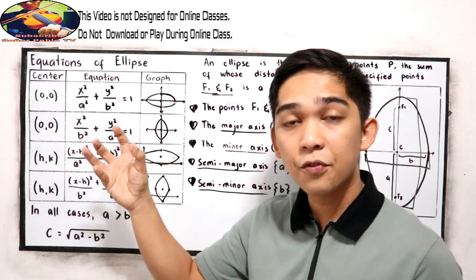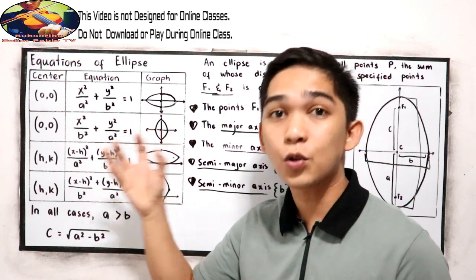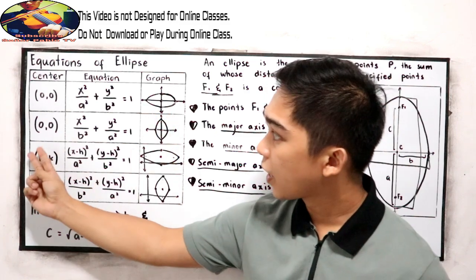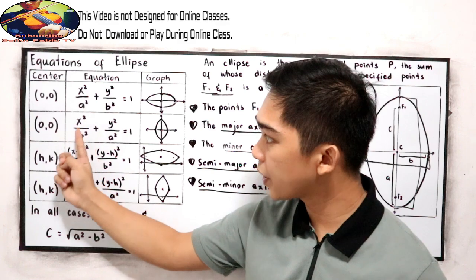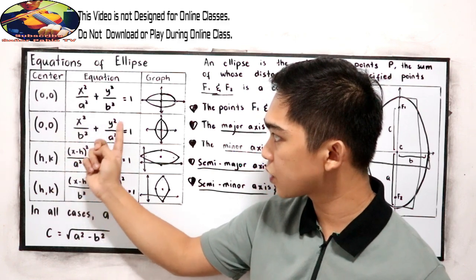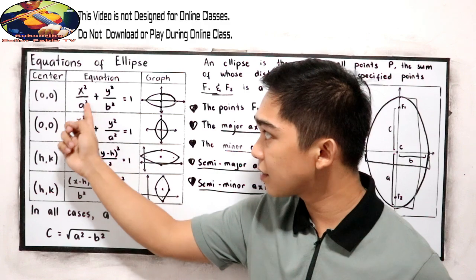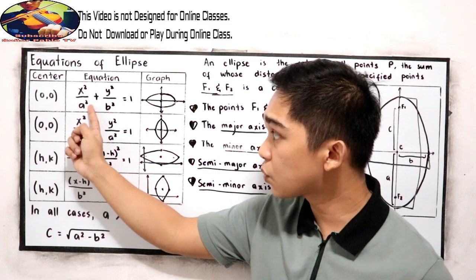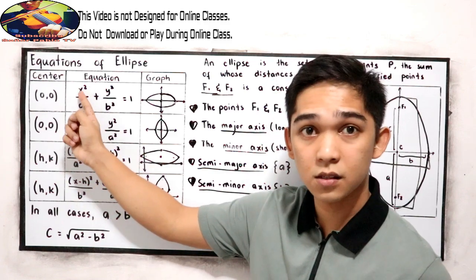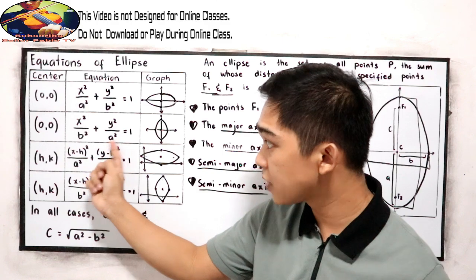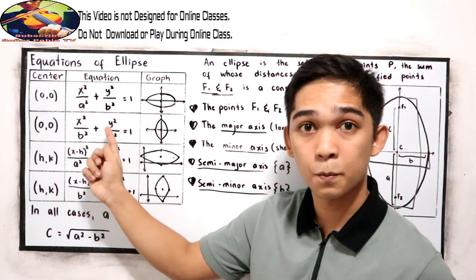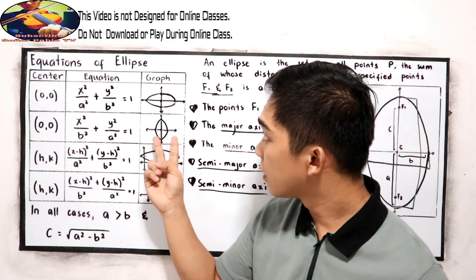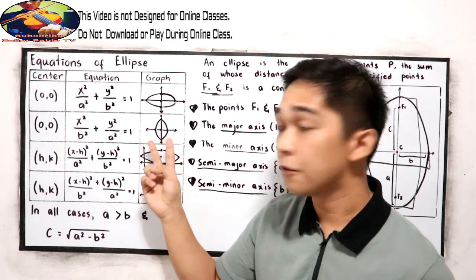The graph you are going to expect from that equation will be in a horizontal form. And if your center is (0, 0) and the equation is x squared over B squared plus y squared over A squared is equal to 1, notice the difference: here A squared is under x, while in this case A squared is under y squared. So this graph is oriented vertically.